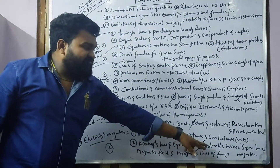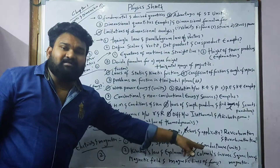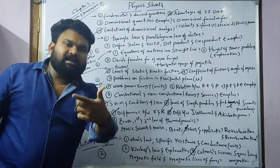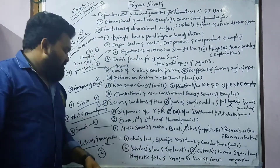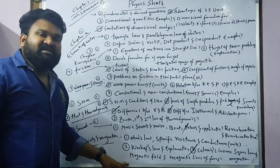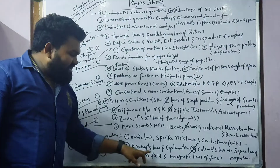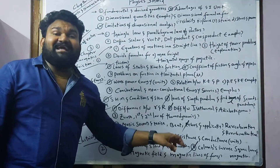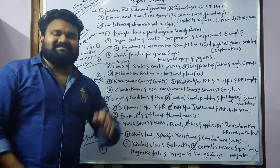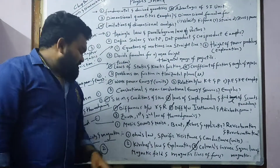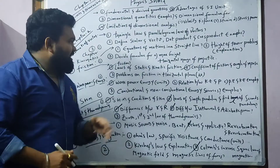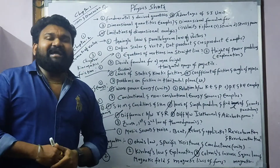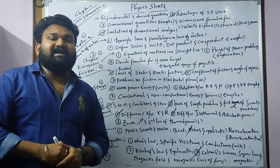Coulomb's inverse square law of magnetism — definition, which is very very important. Next, what is the difference between magnetic field and magnetic lines of force? These two short topics close out the chapters covered.